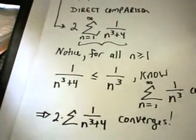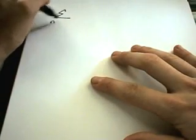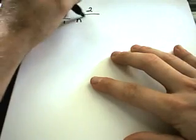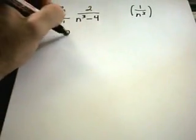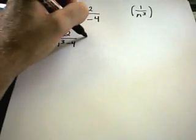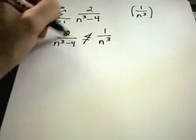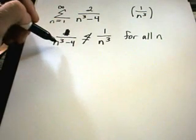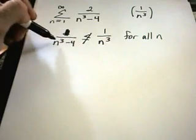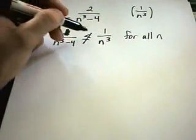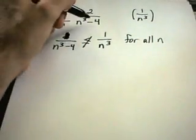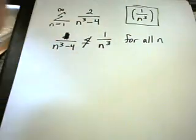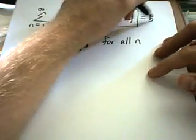Suppose I change this problem just a little bit — make it instead the series from n equals 1 to infinity of 2 over n cubed minus 4. Now if I think about comparing it to 1 over n cubed, it's not always true that 2 over n cubed minus 4 is less than or equal to 1 over n cubed for all n. For example, plug in 2: you'll get 1/4 on the left and 1/8 on the right, and 1/4 is certainly not less than or equal to 1/8. So I can't use the direct comparison theorem, and instead I'll use the limit comparison test, making 1 over n cubed my b sub n.